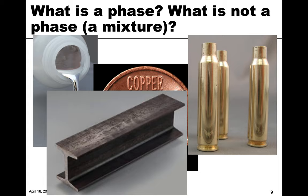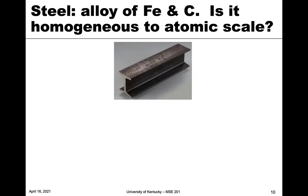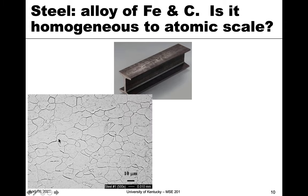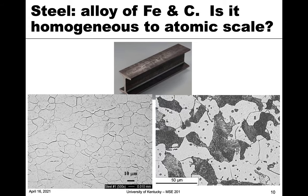One last example: a steel I-beam. This is a bit of a trick question. Steel is an alloy of iron and carbon, and it can be a solid solution homogeneous to the atomic scale, just like cartridge brass. If you have very low amounts of carbon, all of the carbon can be dispersed and form a solution with iron, giving you a uniform single phase.